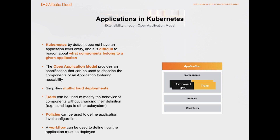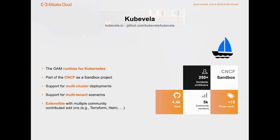Policies are application-level configuration that you can apply to the whole application. For example, if you want to set the debug flag in all components, or modify some parameters based on the type of cluster you're deploying to, a policy can help with that. Finally, a workflow is a simple definition that lets you customize the orchestration of the application — specifying which components are created before others.